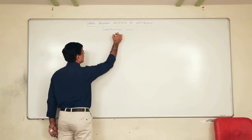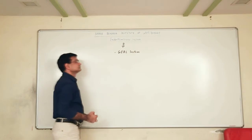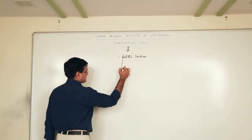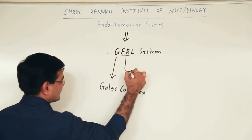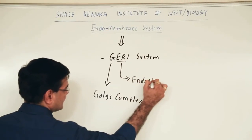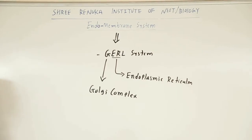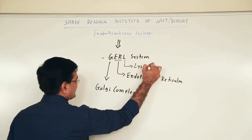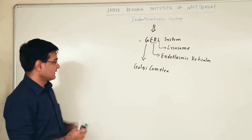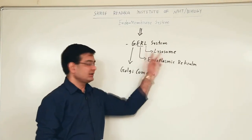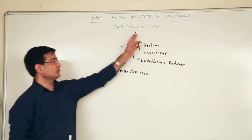The endomembrane system is also called the GERL system. This system is formed of the Golgi complex, ER (endoplasmic reticulum), and lysosome — the three main cell organelles present within the cytoplasmic region. Their functions are interconnected, and that is why they constitute a system called the endomembrane system.